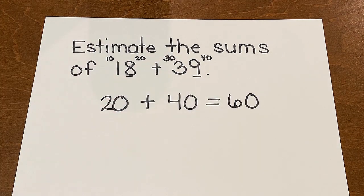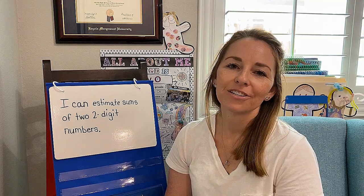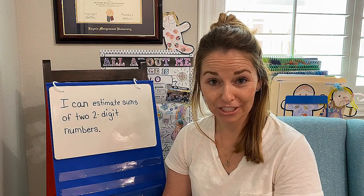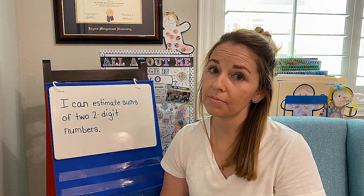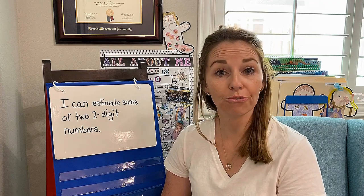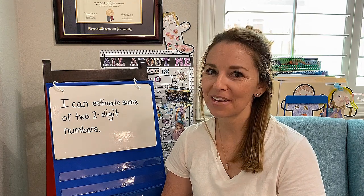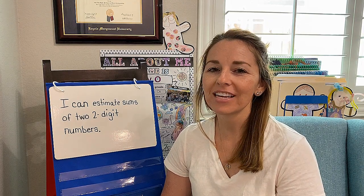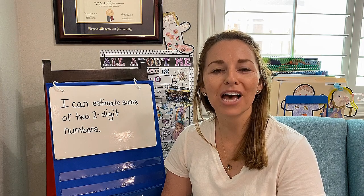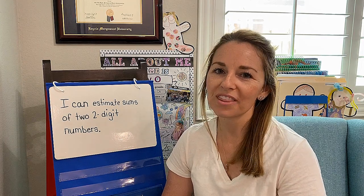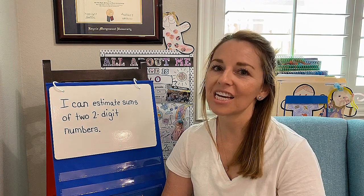That's how you estimate, mathematicians, with rounding. Always keep that chant in your mind: 0 through 4, hit the floor; 5 through 9, climb the vine. That little chant, if you have it in the back of your mind, will help you as you move forward with rounding. Good luck today, mathematicians!